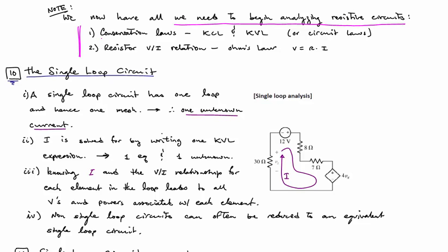Mainly, we have conservation laws, KCL and KVL, and we have the VI relationship, the constituent relationship or terminal characteristics of our resistor. In other words, Ohm's law, or V equals R times I.